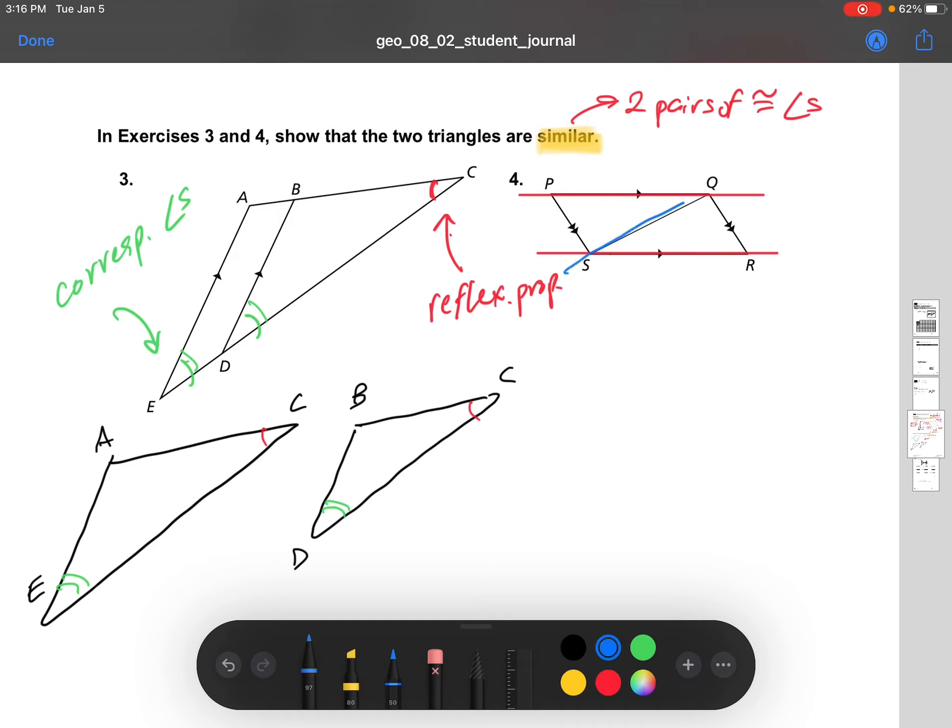And then there's a transversal that goes through them. So besides corresponding angles, the other type of angles that we get with parallel lines are alternate interior angles. So these two angles would be congruent because they're alternate interior. They're inside of the parallel lines but on opposite sides of the transversal. So we've got one pair of congruent angles.